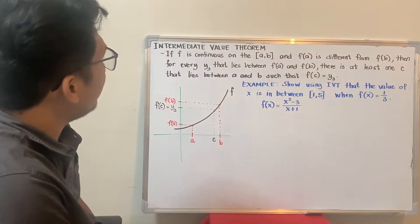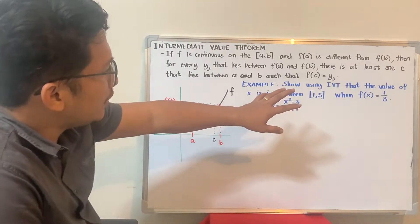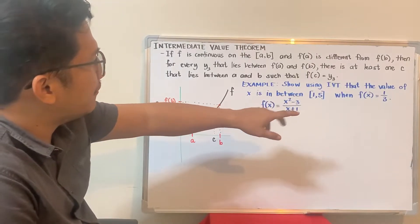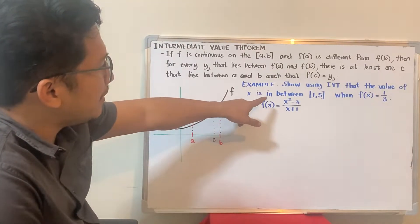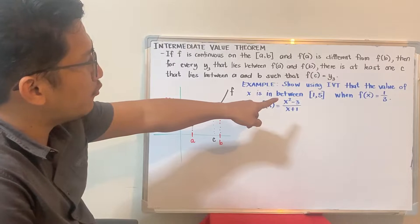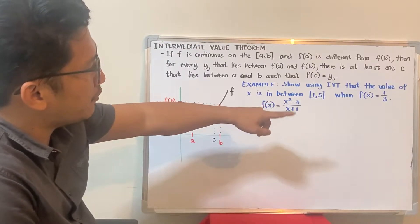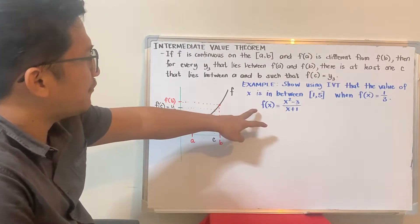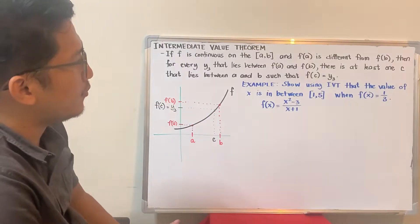This is the Intermediate Value Theorem example: show using IVT that the value of x is in between the closed interval 1, 5 when f of x equals 1/3, given that f of x is equal to x squared minus 3 all over x plus 1.